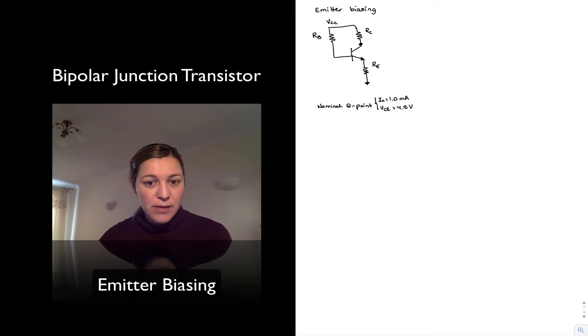I'm going to have some drop across that emitter resistor. And so I'm deciding that that voltage drop across the emitter resistor is going to be 0.5 volts, which gives me a collector emitter voltage of 4.5 volts then, in order to center that collector terminal.